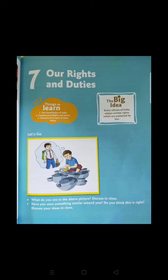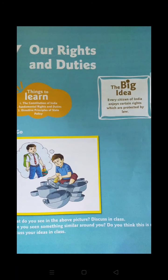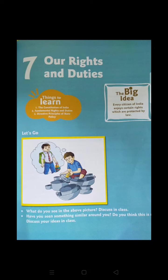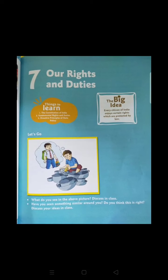Moving further, just look at this picture — what do you understand from it? One boy is doing work and he is dreaming to go to school. As a child is dreaming of going to school, it is definitely his right. You have to discuss it with your parents and in your live classes. Have you seen something similar around you? Do you think this is right? Whenever we have a live session we will discuss it and hear your opinion regarding this picture.